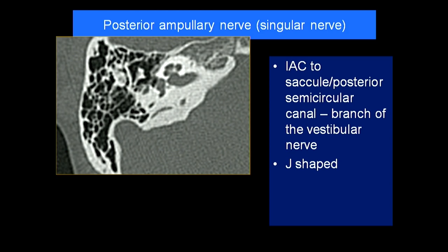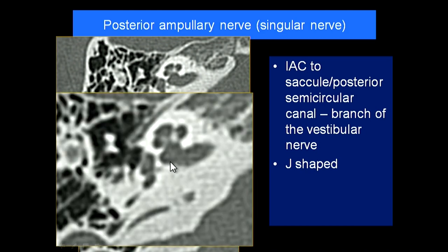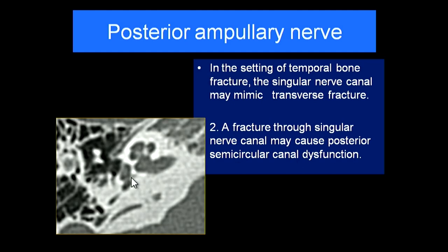The posterior ampullary nerve, or singular nerve, arises from the eighth cranial nerve. You can see a J-shaped structure coming from the internal auditory canal going to the vestibule. Sometimes the singular nerve creates its own pathway before reaching the posterior semicircular canal — this is a normal variant, not a fracture. However, a fracture through the singular nerve canal may cause posterior semicircular canal dysfunction. This J-shaped structure of the singular nerve should not be mistaken for a transverse fracture on temporal bone CT.